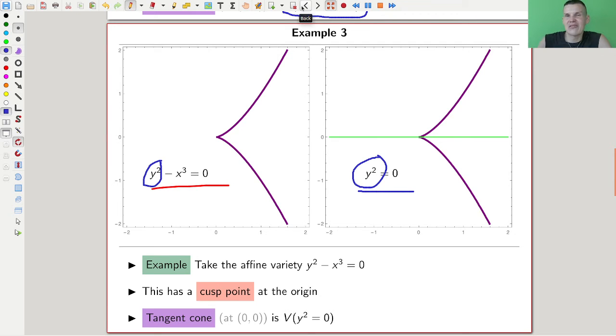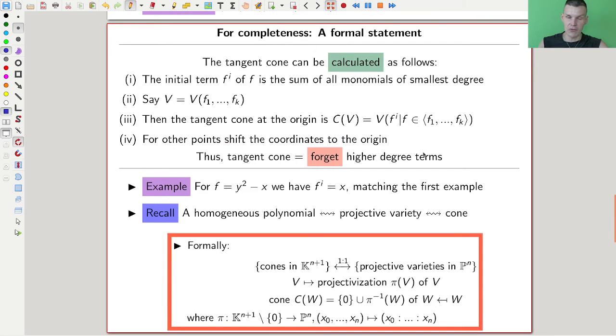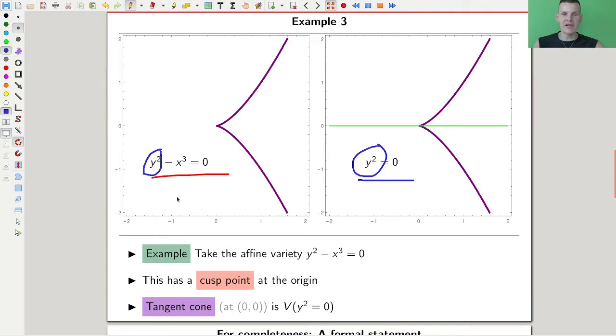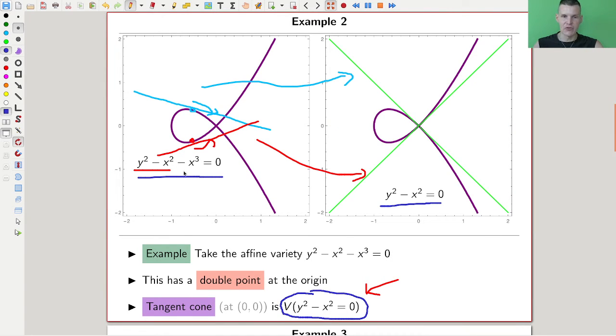Now you might wonder how does this work in general, not just these three examples? In general it works as follows: the tangent cone can be calculated by taking the initial term of our equation, which is the monomials of smallest degree.